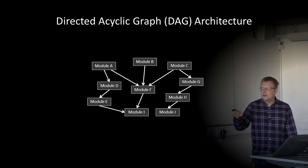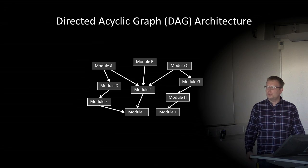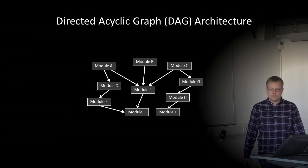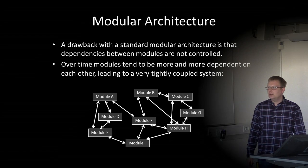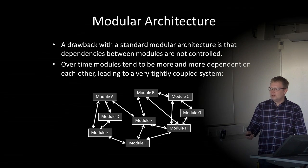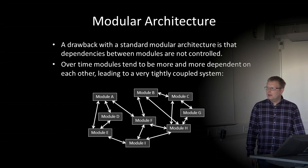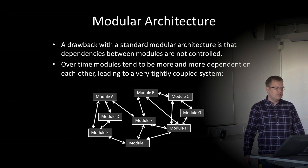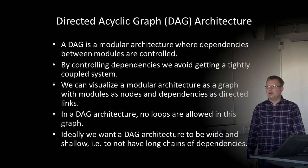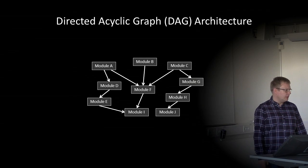In a DAG architecture, the different arrows just go down in the system — we don't create any loops where we go upwards. We should also try to keep it wide so there aren't too many levels. Compared to a standard modular architecture, it's much simpler and more controlled, and it's much easier to replace a module without causing unforeseen problems.